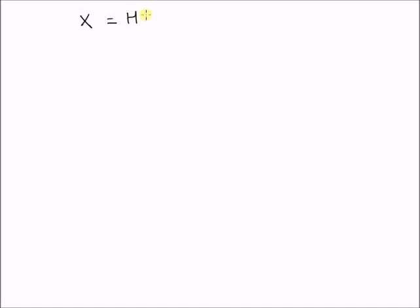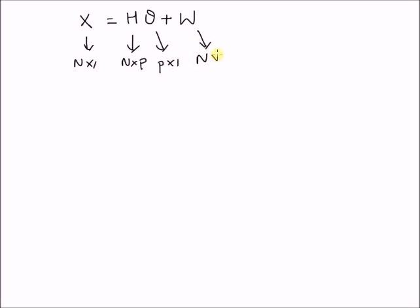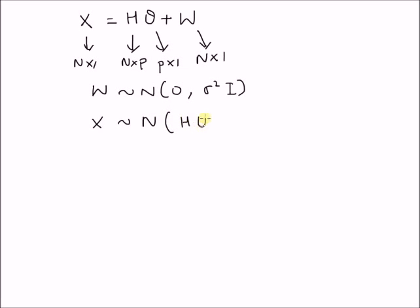That is, given the linear model x equal to H times theta plus w, where x is a vector of size n by 1, H is a matrix of size n by p, theta is a parameter vector of size p by 1, and w is the noise vector of size n by 1. Given that w follows a normal distribution with mean 0 and variance sigma squared times I, the observation vector x follows a normal distribution with mean H times theta and covariance sigma squared times I.